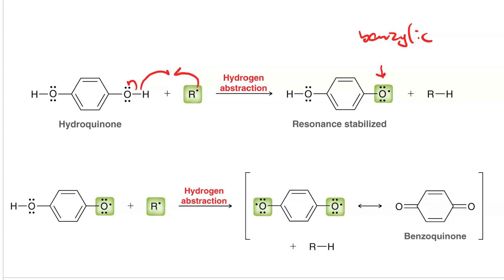We can do a second round of hydrogen abstraction and get the diradical, which has resonance, to make benzoquinone. So hydroquinone is an excellent radical inhibitor.